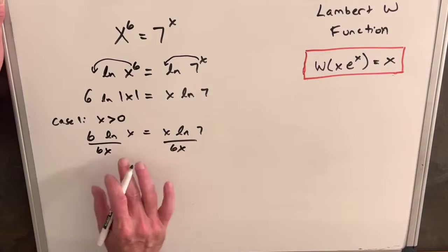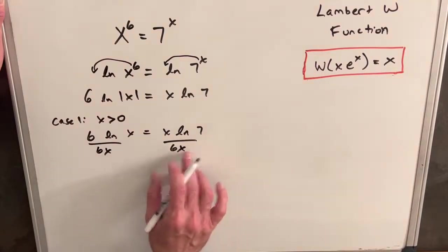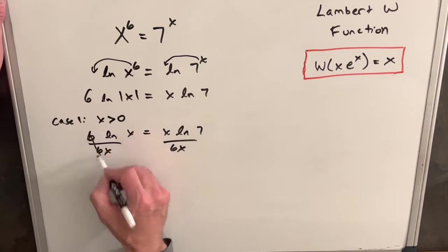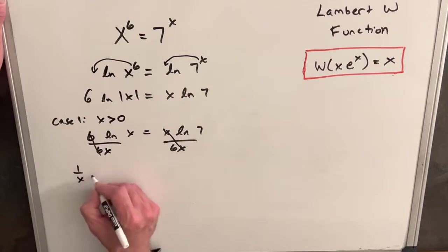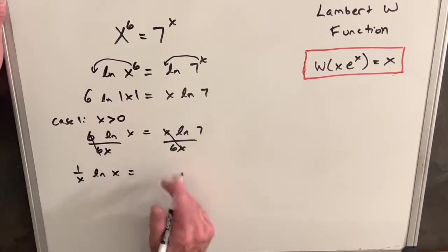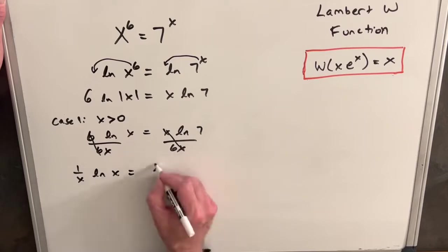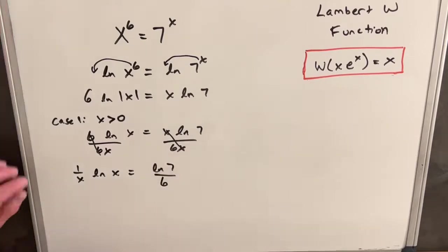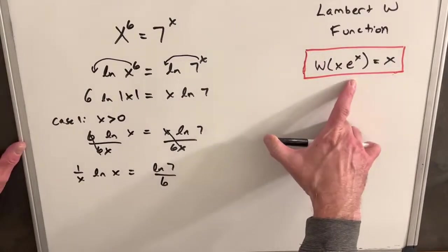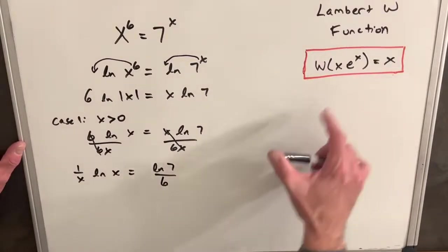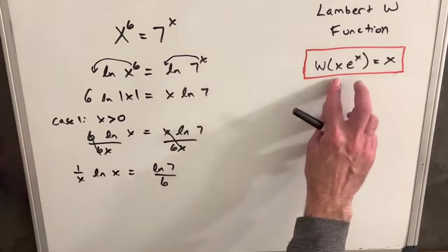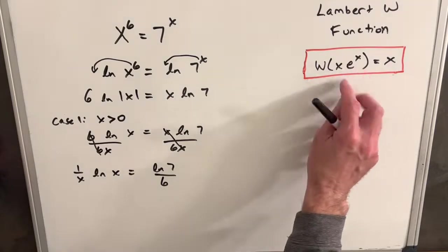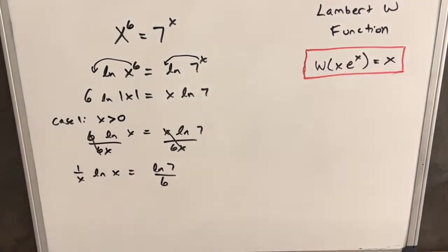Dividing by 6x gets all the x values on one side and the numeric values on the other. The 6 cancels on the left and the x cancels on the right, leaving us with (1/x) ln x = ln 7 / 6. We need to keep in mind our goal here — we want to isolate x using the Lambert W function, which allows us to simplify what would otherwise be an equation we can't solve directly. To do that, we need to get an e into the expression somewhere.